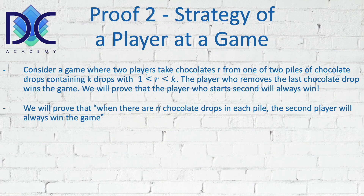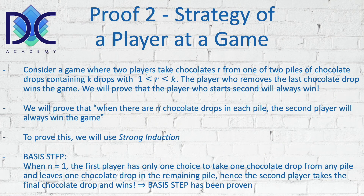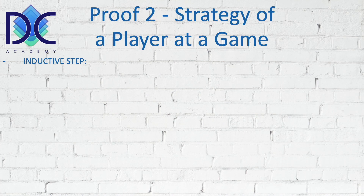We will use strong induction. The basis step is simple: when there is only 1 chocolate drop in each pile, the first player has only one choice — to take that one drop from any pile — leaving one drop in the remaining pile. The second player then takes the final chocolate drop and wins. The basis step is proven.